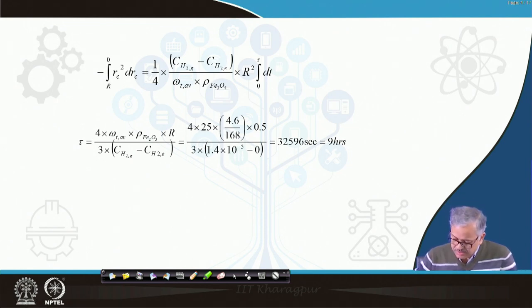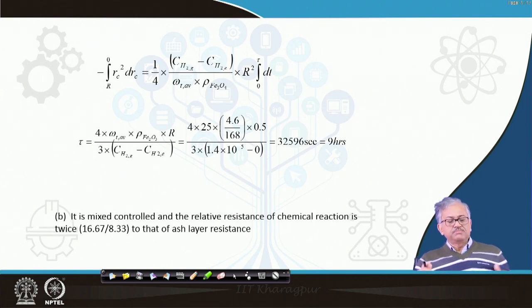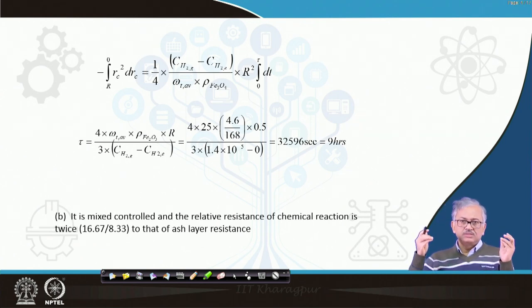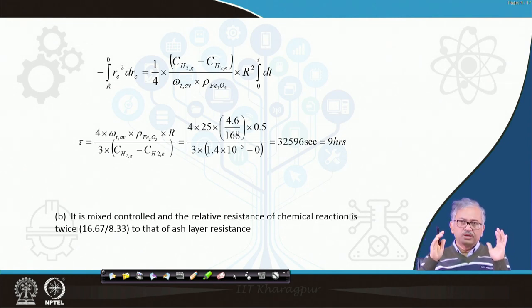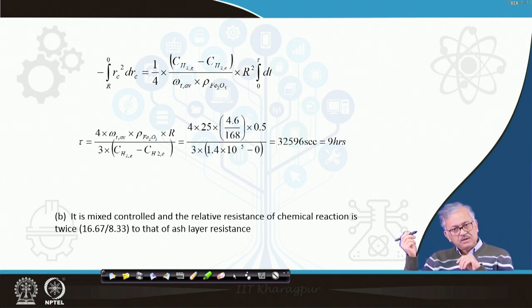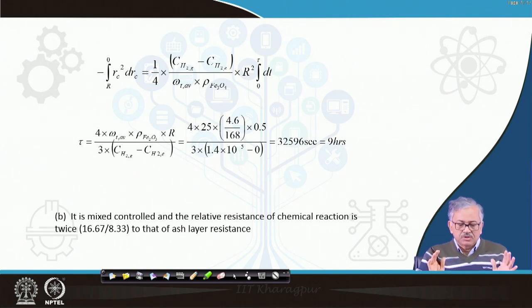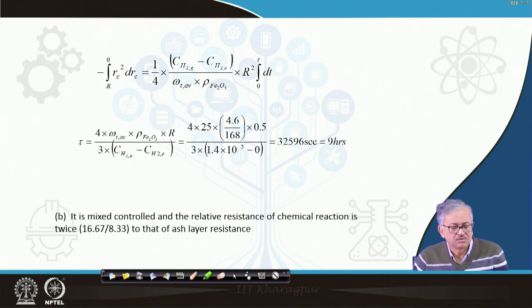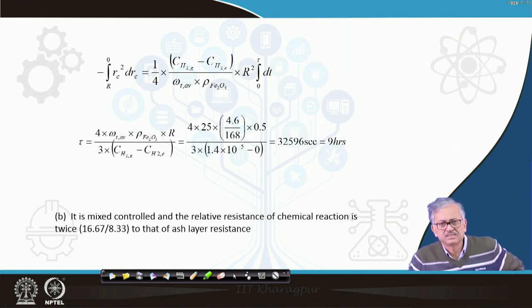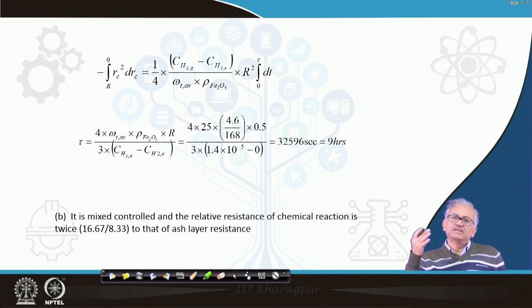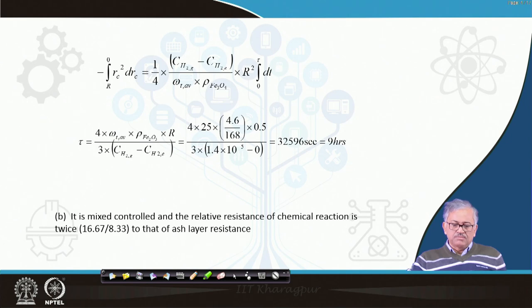The second question was whether any particular step controls the process. The answer is no — it is a mixed control situation where chemical reaction and diffusion through the ash layer are both rate-controlling. The chemical reaction resistance is approximately twice the ash layer resistance, but they are of comparable magnitude. This confirms a mixed control problem.